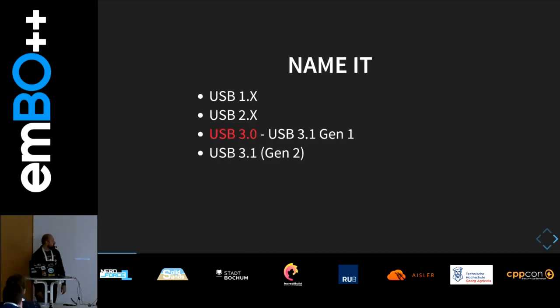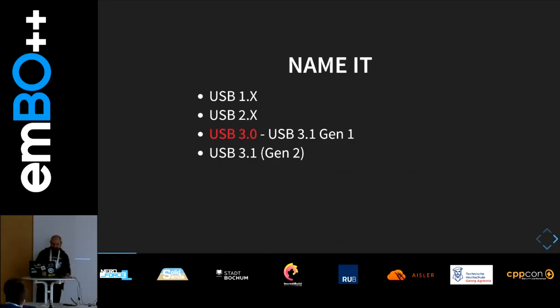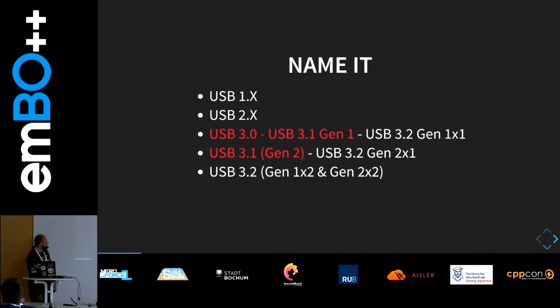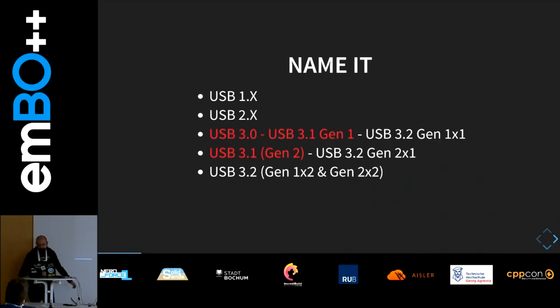Then came USB 3.1, and they had the glorious idea to rename USB 3.0 to 3.1 Generation 1, and the new standard is Generation 2. Nobody knows why, but they defined it this way. And with USB 3.2, they had the same idea again, just more complex. Now we have USB 3.2 Gen 1.1, Gen 2.1, 1.2, and 2.2 — again, faster. And just this month, they announced USB 4.